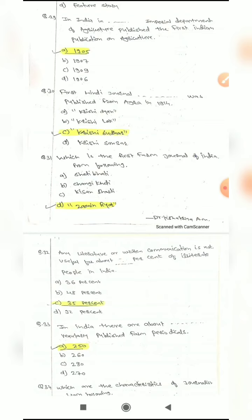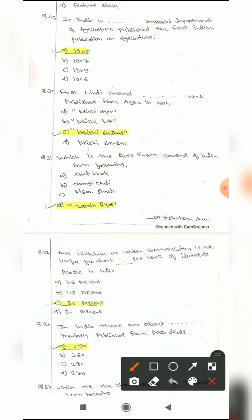Question 29: In India, the blank Imperial Department of Agriculture published the first Indian publication on agriculture. The options for the year are: A) 1905, B) 1907, C) 1909, D) 1906. The correct answer is 1905.